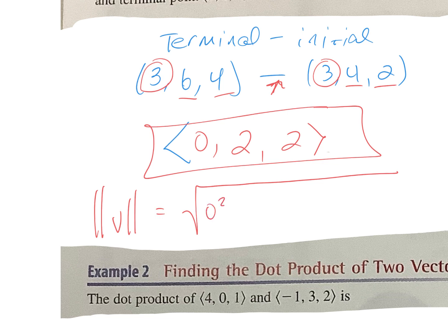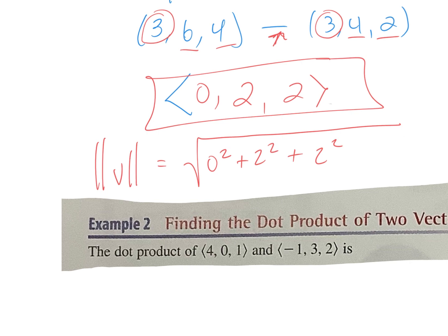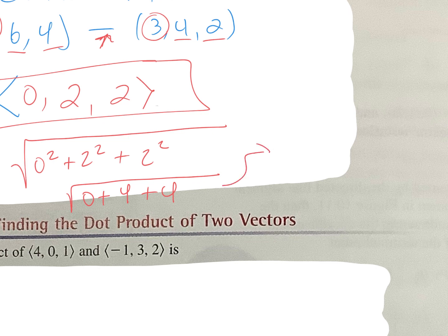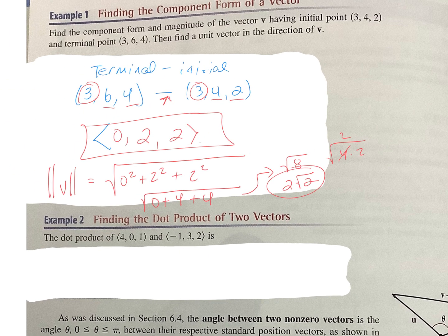So this would be 0 squared plus 2 squared plus 2 squared. So when we simplify this, what's 0 squared? 0 plus 2 squared is 4 plus 2 squared is 4. So this is going to give you square root of 8, which do we leave it like that? No. We would break it down into 2 root 2. Right? This is 4 times 2, so 2 root 2. Anybody have any questions?